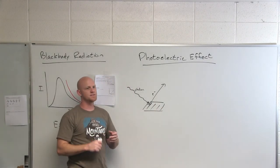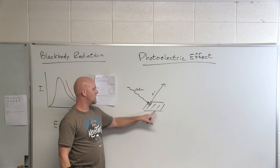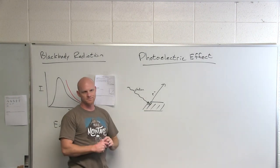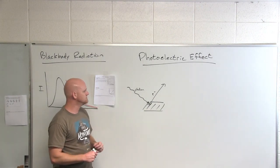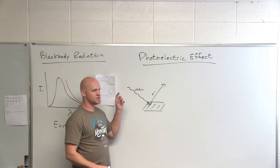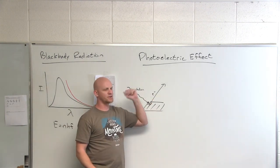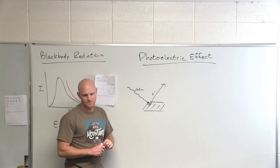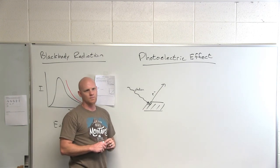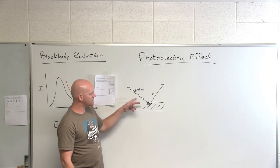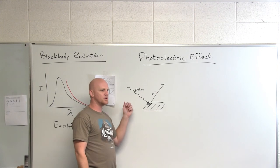So the photoelectric effect deals with shining light onto the surface of a metal. Depending on the light, you have a chance to actually eject an electron off of that metal. And there were a couple of problems here that classical theory couldn't explain.